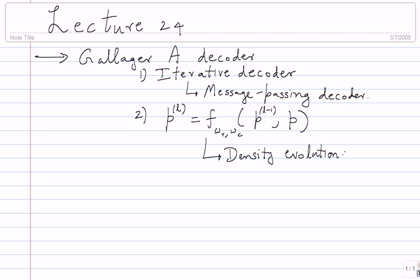Why 'density'? Well, probability density. In this case it's only probability, so there's no real density going on. But when we move to soft decoders, instead of iterating with probability values, you'll be iterating with PDFs, which are probability densities. At that point it will become density evolution. But in general, any procedure like this for analysis is described as density evolution.